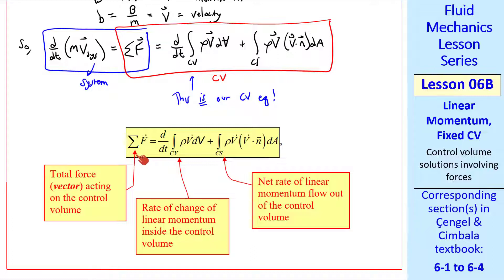So this is our control volume equation. I typed it up here along with an explanation of the terms. This is the total force vector acting on the control volume. This term is the rate of change of linear momentum inside the control volume, and this is the net rate of linear momentum flow out of the control volume. Unlike what we had for mass and energy, this is a vector equation. As we'll see, in practice we usually split this up into components.